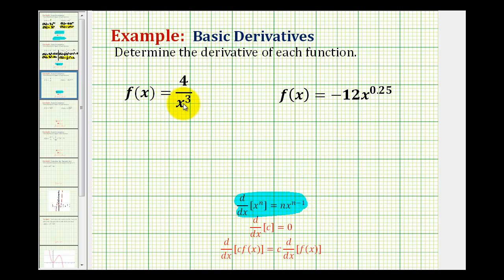So for this first function, it doesn't seem to fit the form of the power rule. So we do have to write this to fit the form of the power rule. If we move this x to the third up into the numerator, it'll change the sign of the exponent. So this function is the same as f of x equals 4x to the power of negative 3.